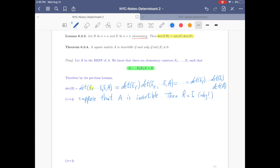I like to put 'why' here so that next time when you read this, you think about it. So then R is I. Therefore, when you take the determinant of R, it equals the determinant of I, which is 1, and that's not zero.